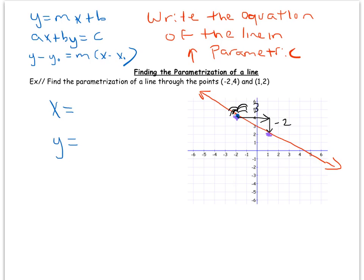Now let's introduce the notion of time. Think of the spider's horizontal motion: its x-coordinate starts at negative two. Let's say that in t seconds it moves right three. So its x-coordinate is x equals negative two plus three t.